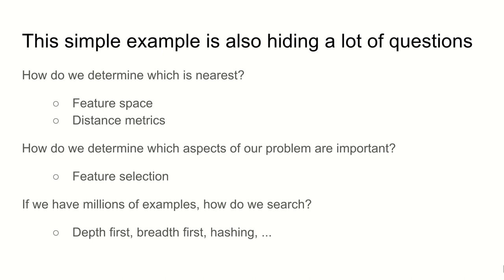How we determine which aspects of our problem are important is another question that's hidden by this. So that could be down to feature selection. So we might decide that certain aspects of the problem are not interesting. So we might say colour is irrelevant. We're only interested in the robot's number of functions it's got. And finally, if we've got millions of examples, how do we search? And that's something I'm really going to skirt over here. But with nearest neighbour method, that's one of the really big questions.